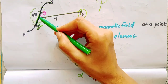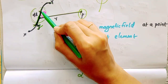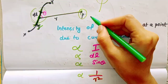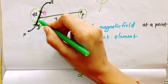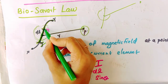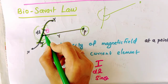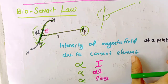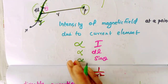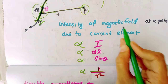Theta is the angle between the current element and the line joining it to the point. The axis of the current element and the distance between the point and the element are related by the angle theta. The magnetic field intensity is directly proportional to the current and the length of the current element.